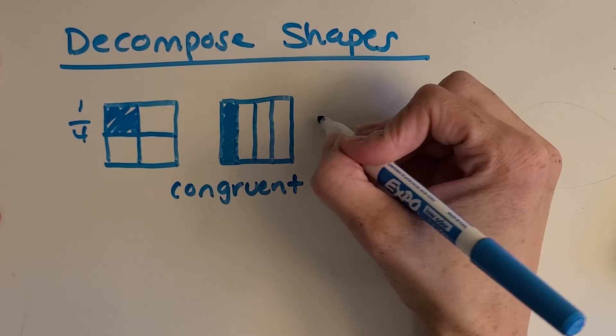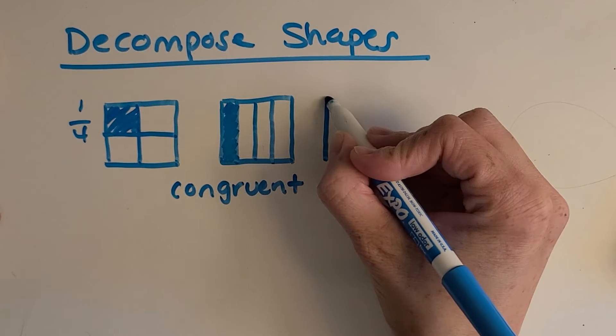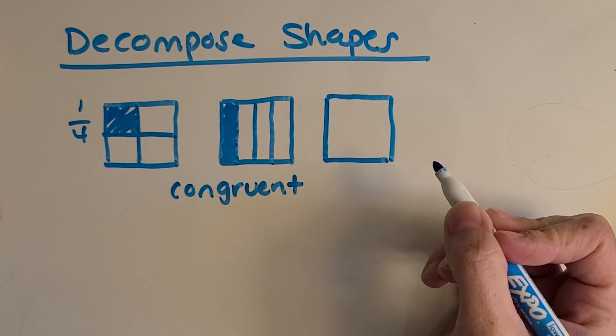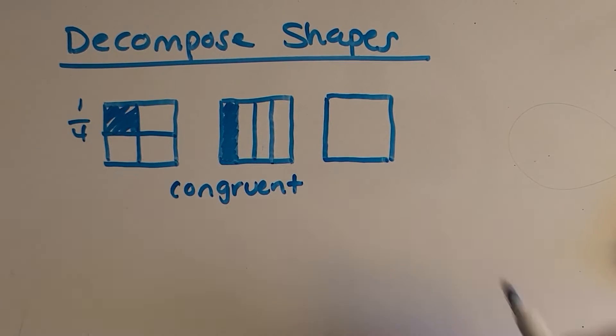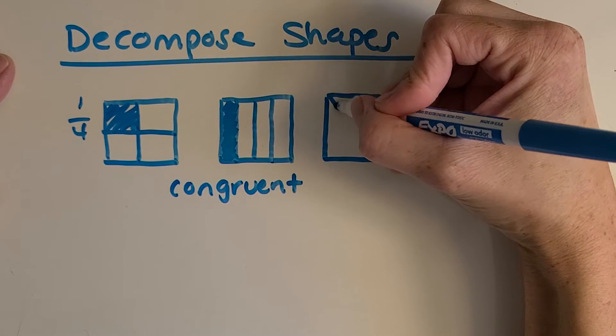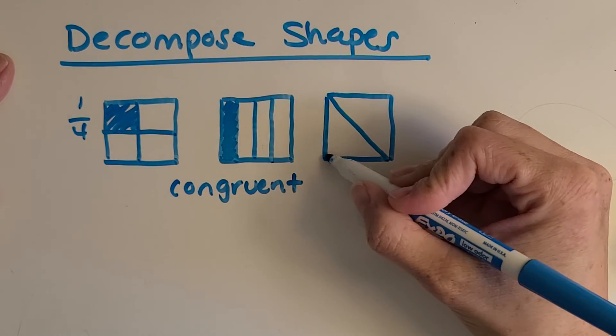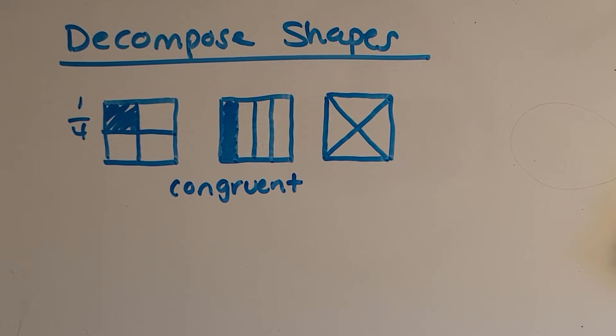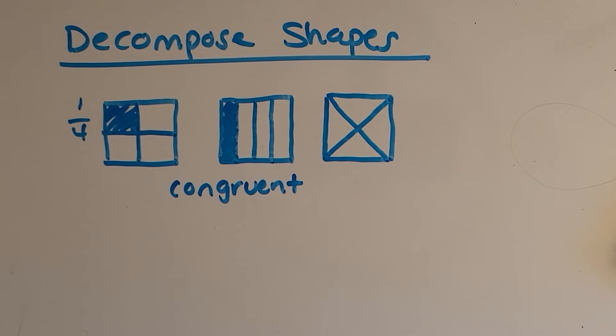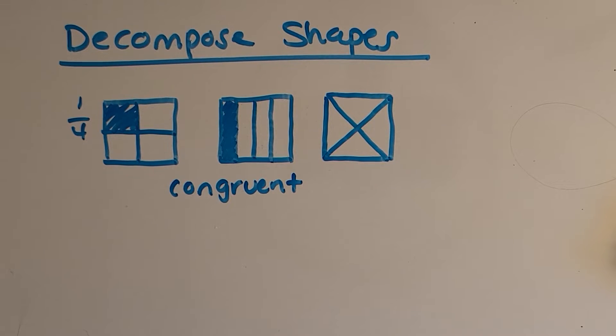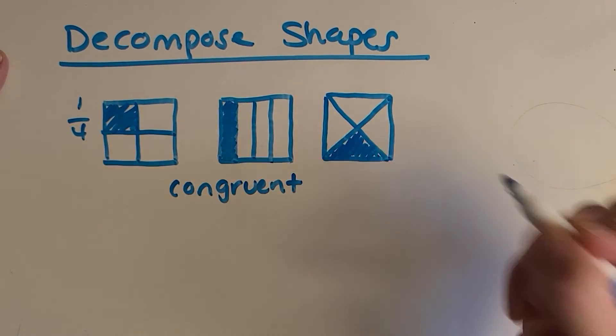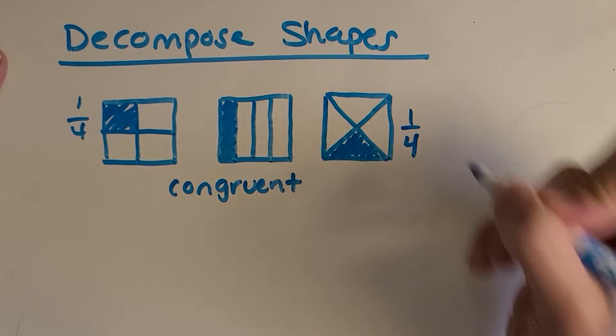Let's see if we can come up with another way, because you might have been thinking of something a little different. So I'm going to try to make the same congruent square. And you might have thought of something like this. Yes, this one's cool. Are those all congruent pieces, equal pieces? Yes, they are. So I could shade one of them and it also represents one fourth.